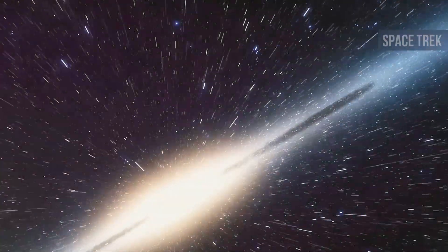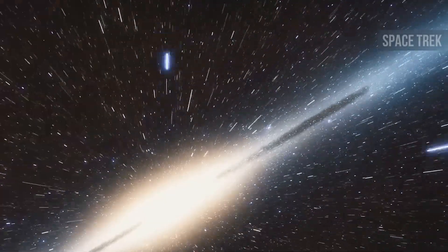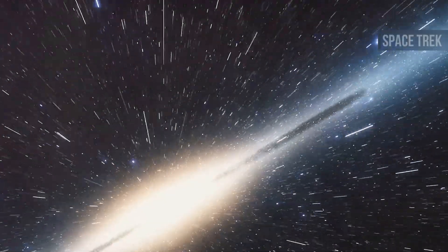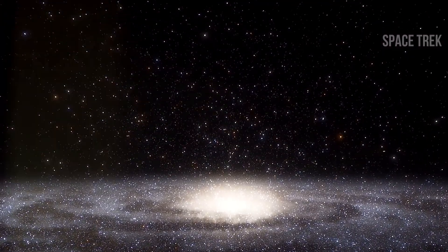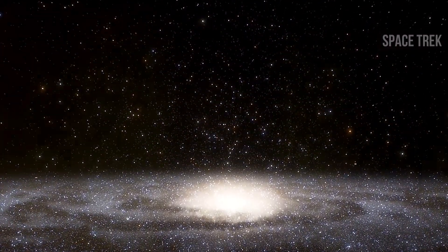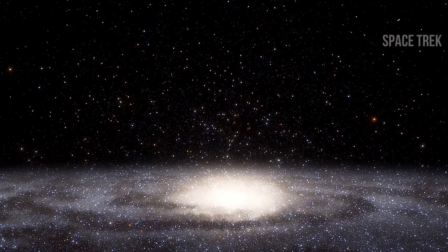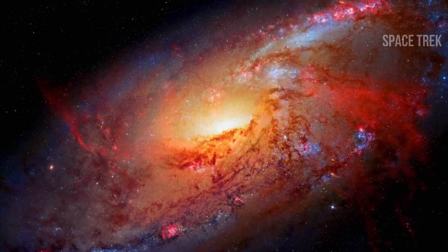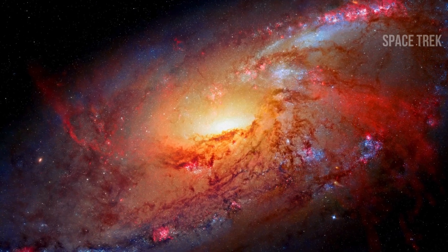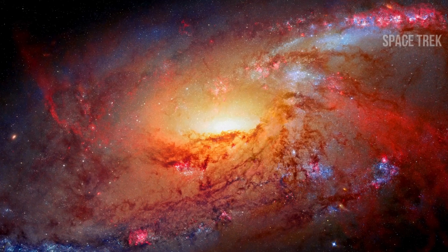You see, light, though fast, isn't infinite. It takes time to travel. The universe is around 13.8 billion years old, so we can only see as far as light has traveled in that time. Beyond that, it's not that there's nothing there, it's just that the light from those regions hasn't reached us yet. Therefore, when we gaze into the cosmos, we're not just looking across space, but also back in time. The farther we look, the older the light, the closer to the universe's birth we see.